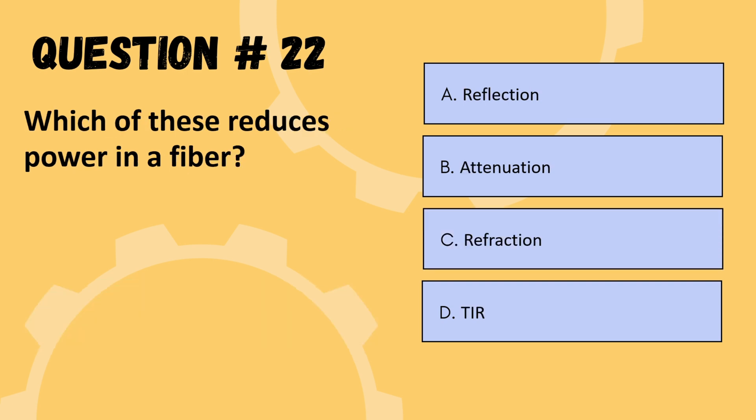Next question: which of these reduces power in a fiber? Options are reflection, attenuation, refraction, or TIR. The correct option is B: attenuation.